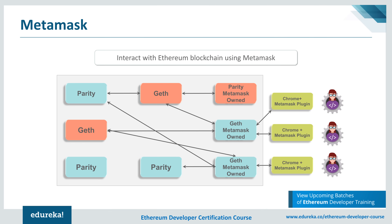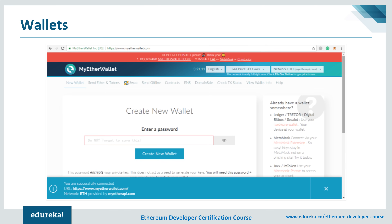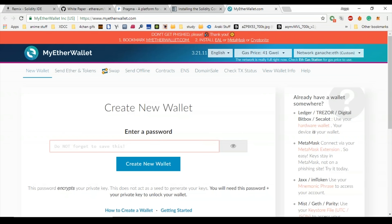Infura has Geth or Parity blockchain nodes installed. There is another important application of MetaMask when dealing with transactions on the mainnet: the best way to use MyEtherWallet is to use it with MetaMask to carry out transactions securely. MyEtherWallet is a free, open-source client-side interface for generating Ethereum wallets and more. Using MyEtherWallet you can interact with the Ethereum blockchain easily and securely. You should always double-check the URL before unlocking your wallet.